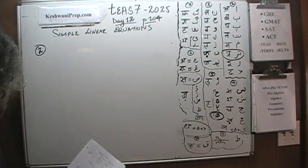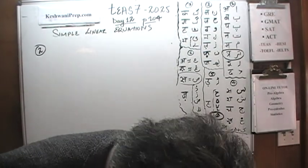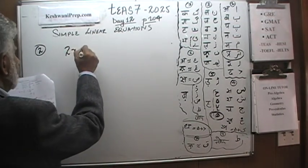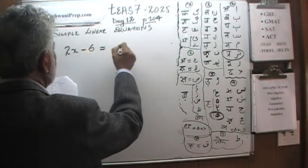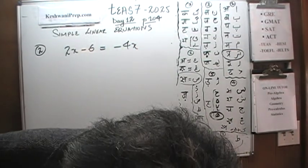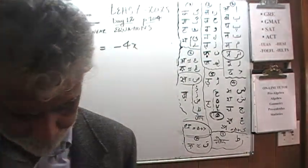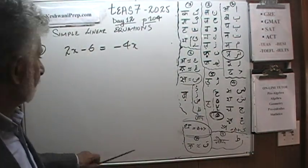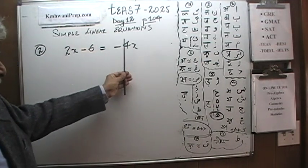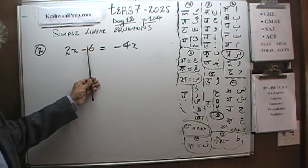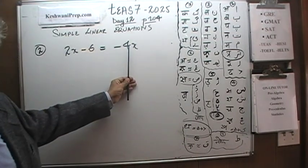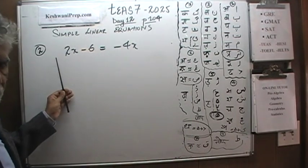Number 2. In number 2 we have 2x minus 6 is equal to negative 4x. We have to figure out what x is. Here we have two things to do: we have x on the right-hand side that we need to bring to the left, and numbers on the left-hand side that we need to bring to the right. All known quantities go to the right; all unknown quantities go to the left.